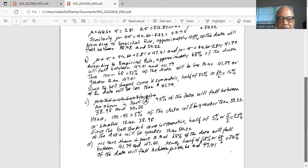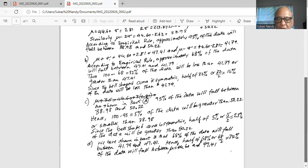Hence half of the 68% or 68 divided by 2 is 34% of the data will fall between 44.60 and 47.41. Remember mean is 44.60. So the total